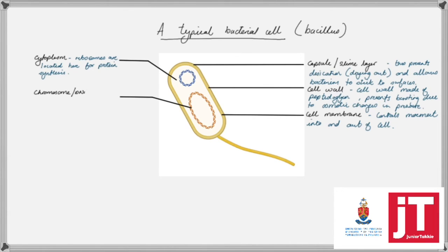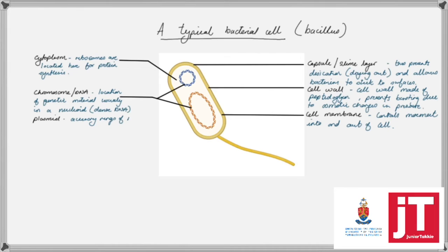We'll also find a chromosome — this is the location of the genetic material of the bacterial cell. If it is highly concentrated in one part of the bacterial cell, we refer to this area as the nucleoid. Sometimes bacteria also have plasmids, which are accessory rings of DNA found inside the cytoplasm as well, and you can see them quite clearly there in blue.